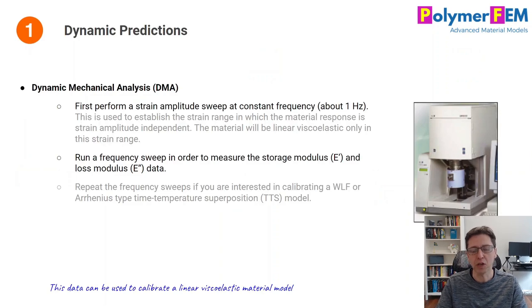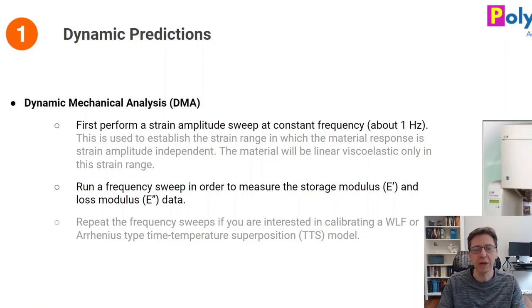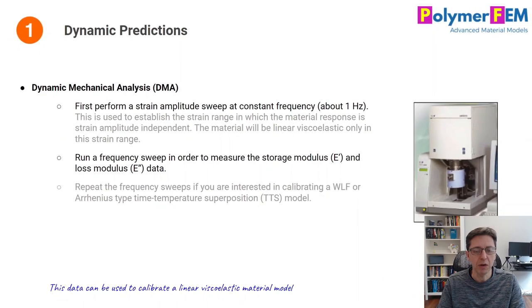For dynamic predictions and frequency domain work, the answer is dynamic mechanical analysis, DMA. You start with an amplitude sweep at a constant frequency to find the domain of strains in which the response is linear viscoelastic. Then you do a frequency sweep to measure the storage and loss modulus within that strain range. If you want a temperature-dependent material model, you can repeat these frequency sweeps to enable a time-temperature superposition calibration.